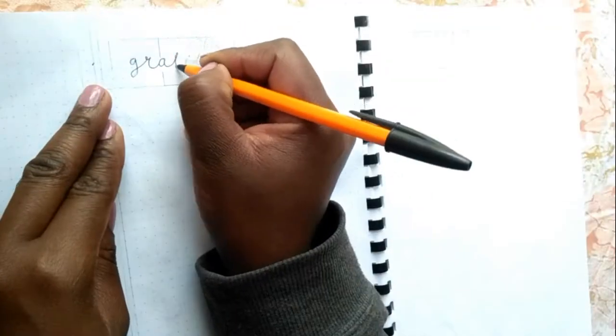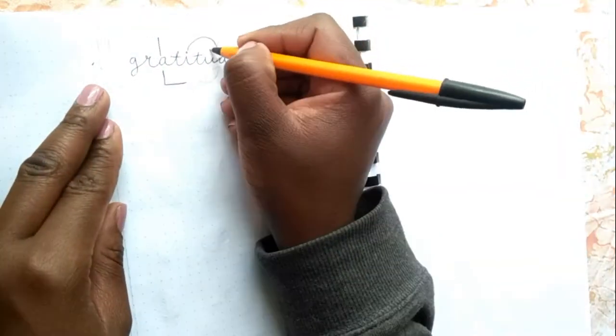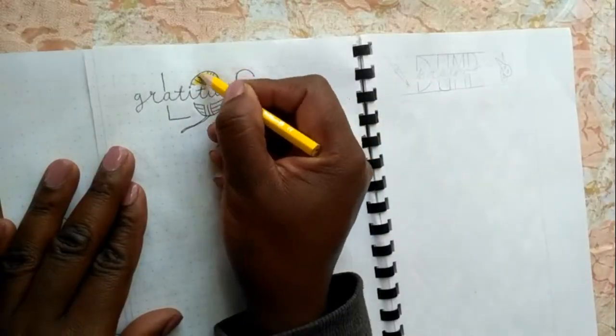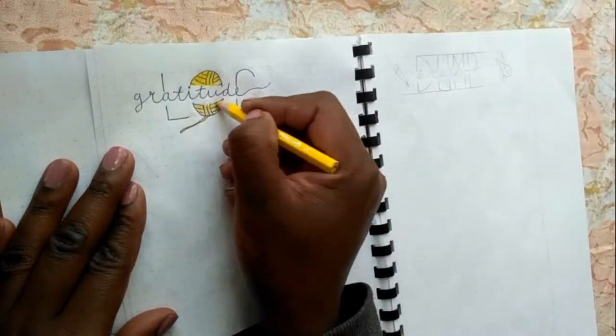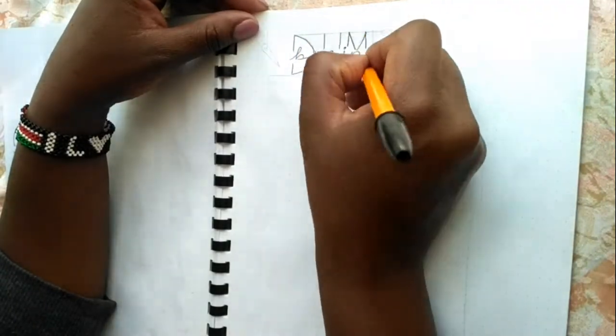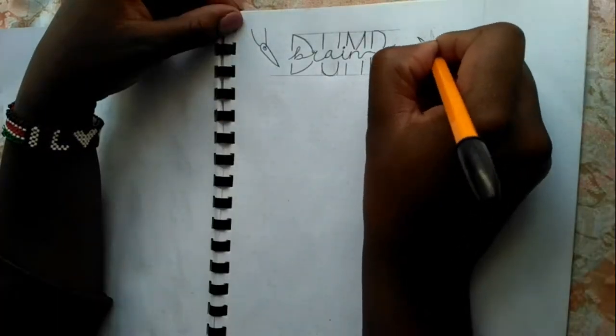Next is my gratitude log and brain dump pages. I like to keep them pretty simple so the only thing that I'll have is a cool header for each page and of course on my brain dump side I'll have to cut out the nine dot spaces piece of paper and that's done.